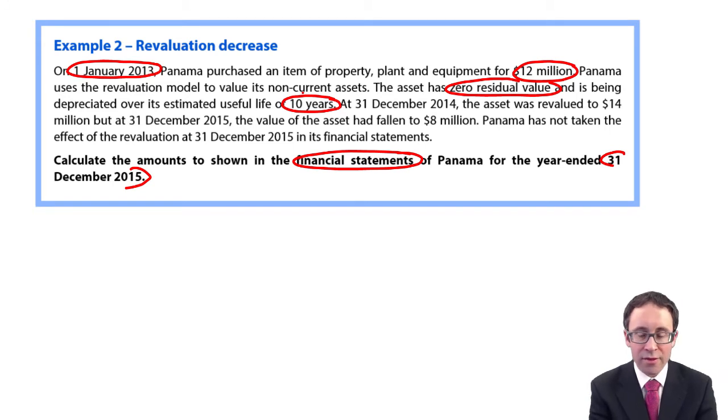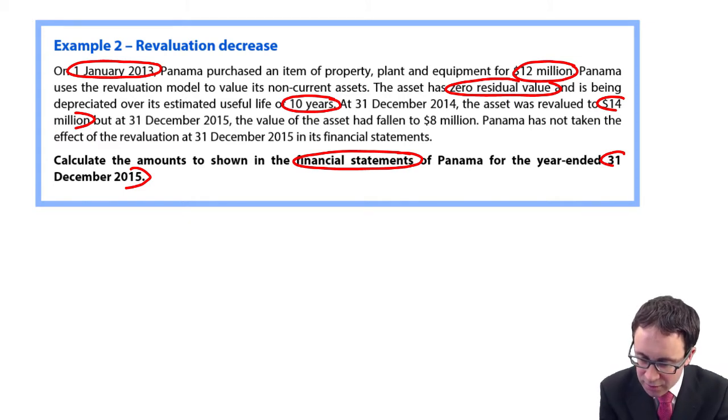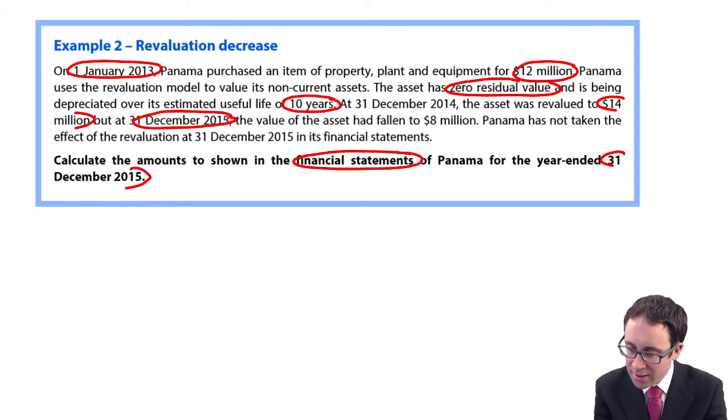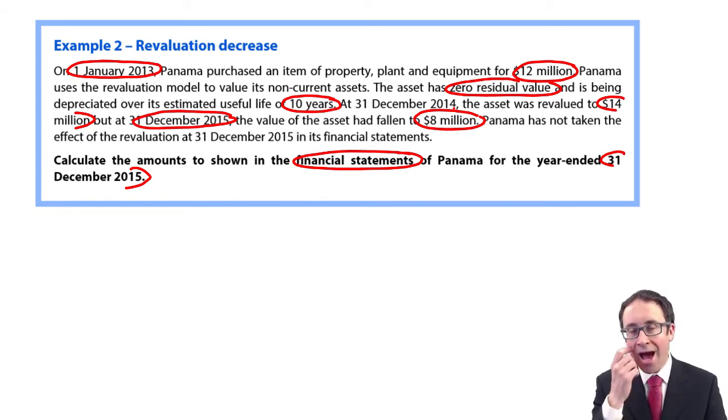At the 31st of December 2014, the asset was revalued to $14 million. That's its fair value at that date, so any gain is going to go to reserves. However, at the 31st of December 2015, at the end of this year, the asset had fallen in value to $8 million. Panama had not taken the effect of the revaluation at the 31st of December in its financial statements. We need to show what's going to be within those financial statements.